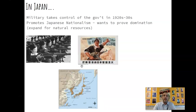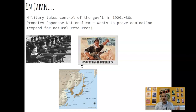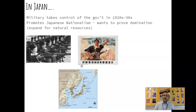In Japan, the military takes control of the government in the 1920s and 30s. Remember, we had the Meiji Restoration in the 1800s, where they successfully industrialized. The Samurai-class essentially puts the Emperor back in a figurehead position. With issues after World War I, the military takes control and wants to prove their military dominance. They are heavily focused on Japanese nationalism — the belief that the Japanese are superior. They industrialized successfully and believe they should be on an equal playing field as the Western industrialized countries.